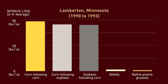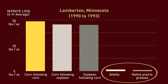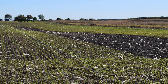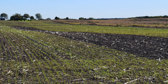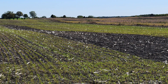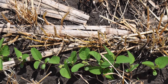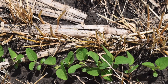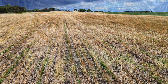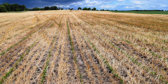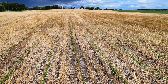As further evidence, when a perennial plant was present on the drainage plots at Lamberton, losses go to nearly zero. This indicates that if there is a living plant to take up late-season mineralized N, nitrates may be kept out of surface water. This is one reason why there is a push to incorporate cover crops into production systems.